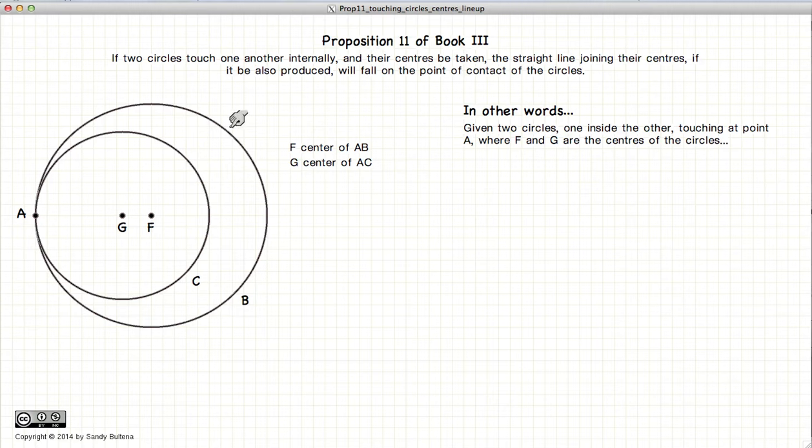If we have two circles, one inside the other, with the center of the smaller circle being G and the center of the larger circle being F, if we draw a line between the two centers and extend it out, it will reach the point where the two circles intersect.